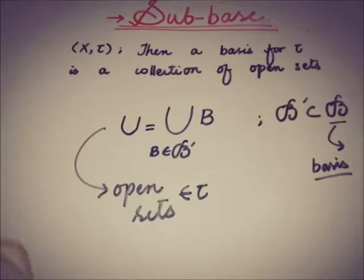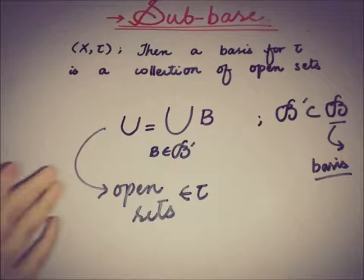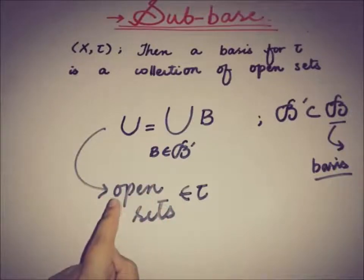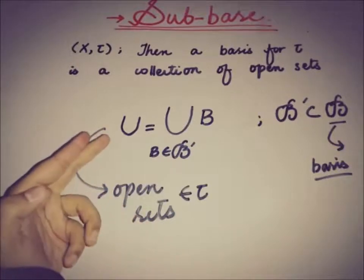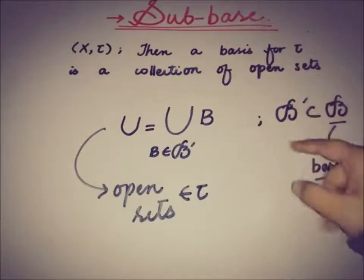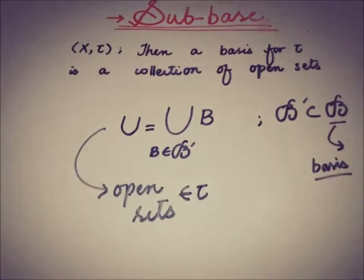If X and tau are a topological space, then a basis for that topology tau is a collection represented by B — a sub-collection of open sets such that we can write open sets as the union of a sub-collection of open sets from B. Every open set can be written as the union of some elements of that basis. Members of that basis B are known as basic open sets.